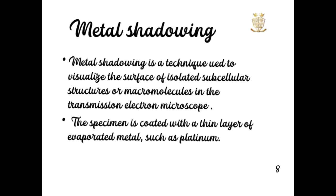The another technique is metal shadowing. Metal shadowing is a transmission electron microscopic technique. Metal shadowing is a technique used to visualize the surface of isolated subcellular structures or macromolecules in the transmission electron microscope. The specimen is coated with a thin layer of evaporated metal such as platinum.